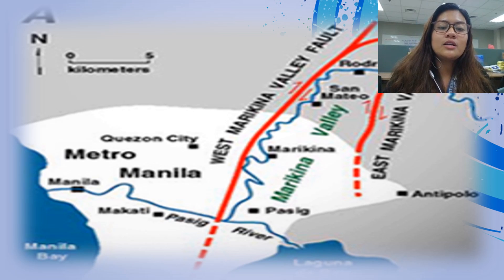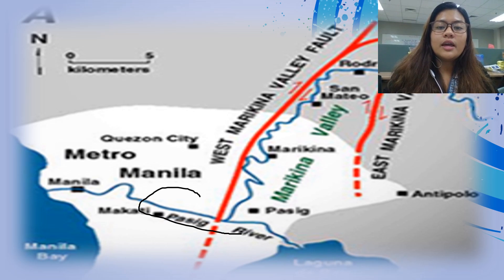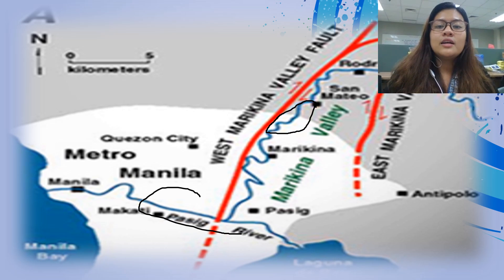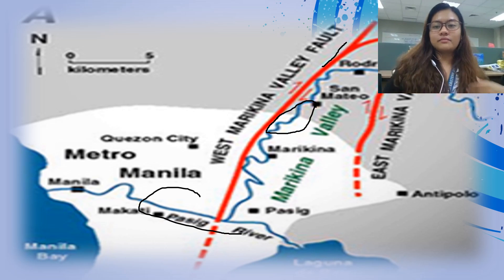As you can see here, this is the Pasig River and this is the Marikina River, and this line is the West Valley Fault line.